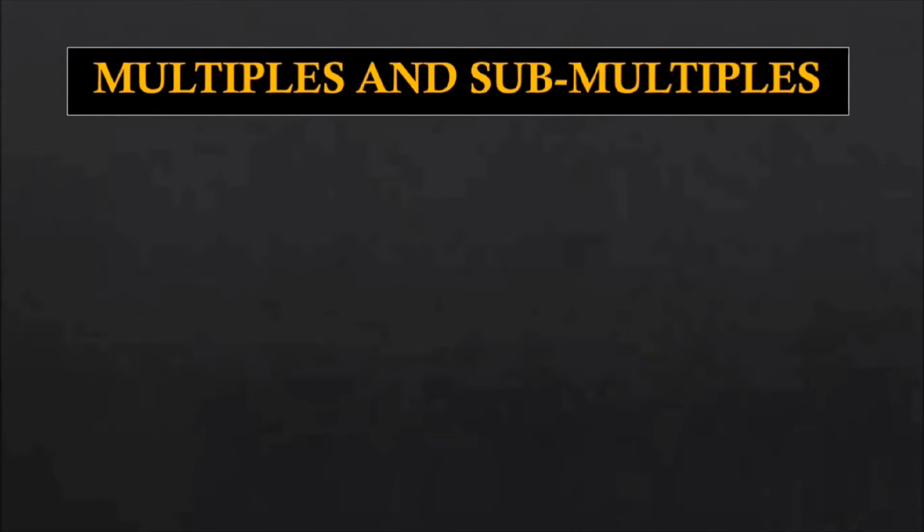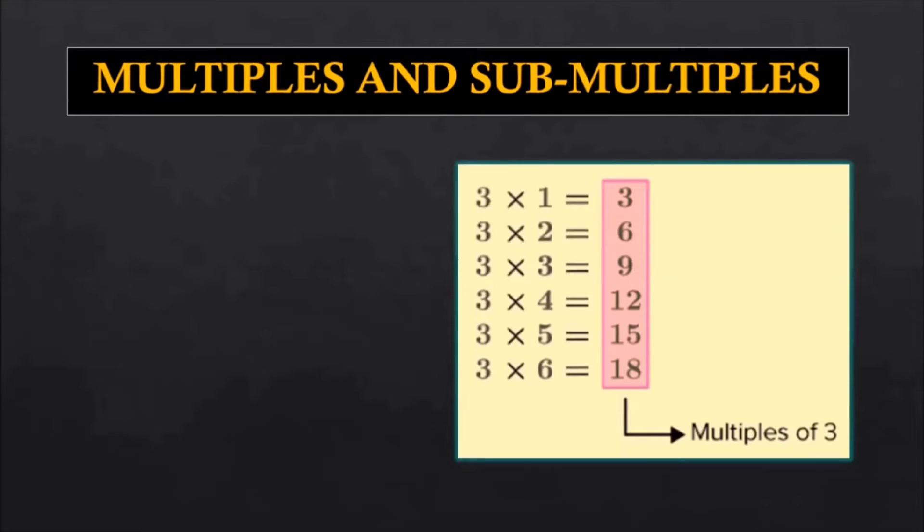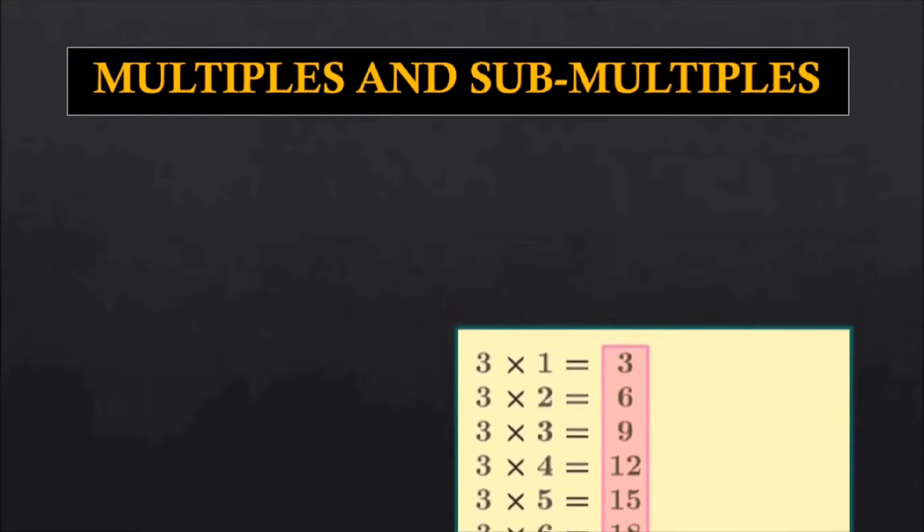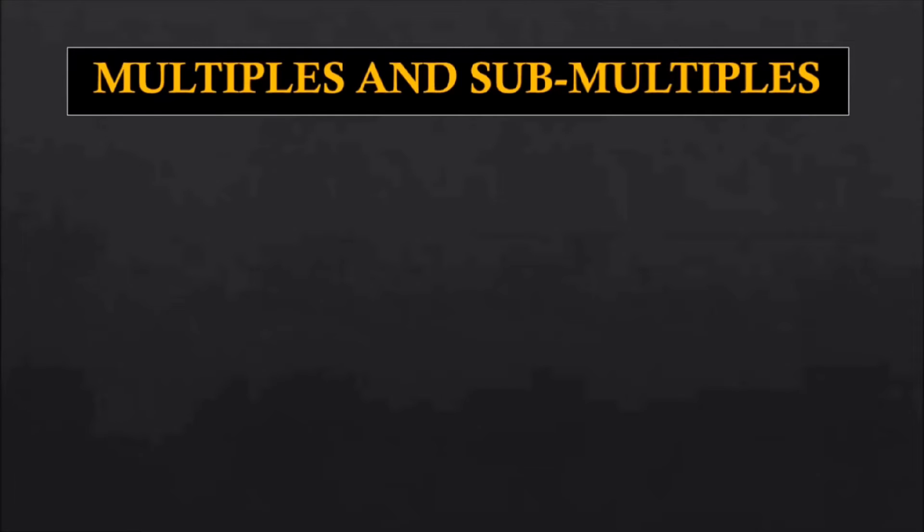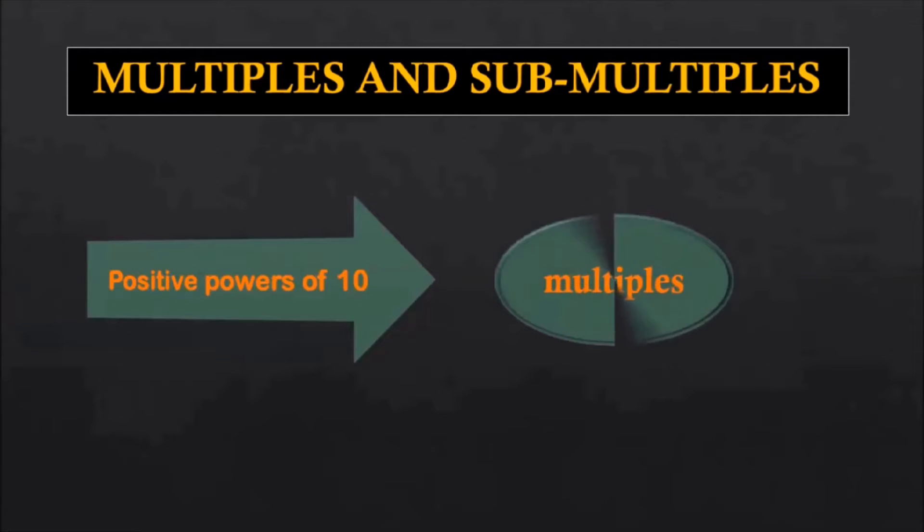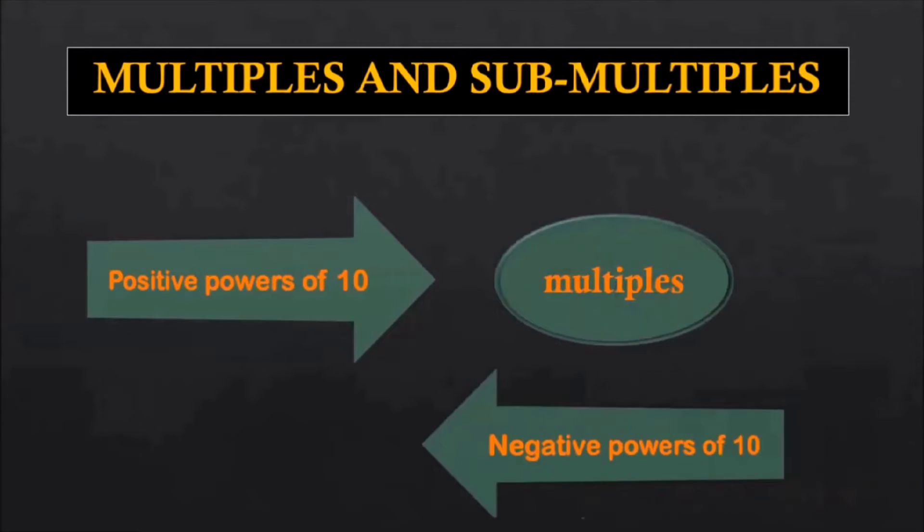Multiples and submultiples. Generally in math, multiple is defined as the product result of one number multiplied by another number. For example, here 3 is multiplied by several numbers and 3, 6, 9, 12, 15, 18 which we get after the multiplication with 3 are called as multiples of 3. Here in physics, sometimes we represent the magnitude of physical quantity as power of 10, and why that we will discuss a little later. Just for now, positive powers of 10 are called as multiples and negative powers of 10 are called as submultiples.